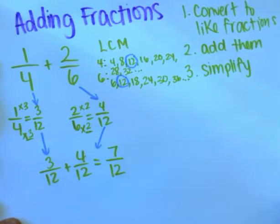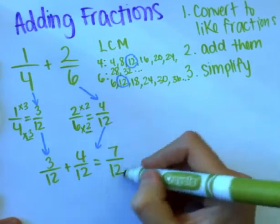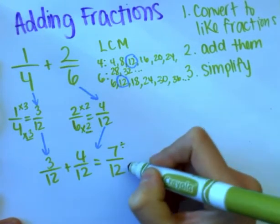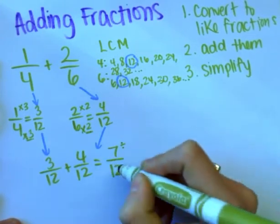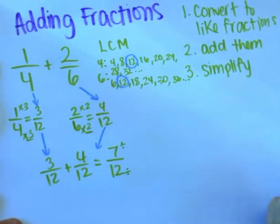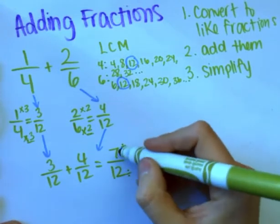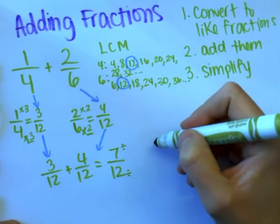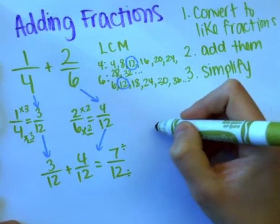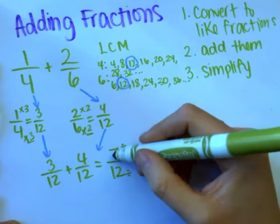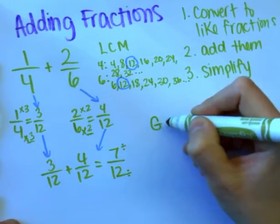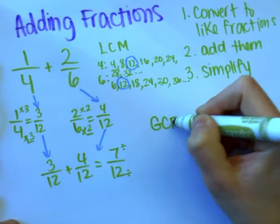I'm going to pause and see if I can simplify. To simplify means we're going to make the denominator smaller if we can. To do that, we would need to divide the top number and the bottom number by the same number. We want to see if there are any factors that seven and twelve share — this is finding the greatest common factor.